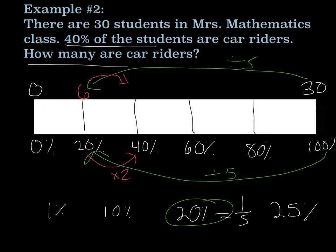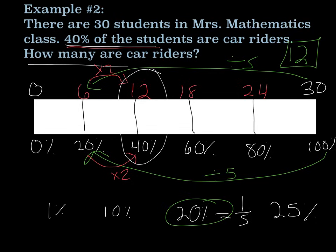But we're trying to get 40%. So to go from 20% to 40%, I would need to times it by 2. So I would have to do the same thing on top, times it by 2, which gives me 12. And if I needed to continue this, if I remember that every 20%, I'm adding 6, I could continue the number line. But the question in this problem says 40% of the students. So I go to 40% and I see that it is 12. So my answer would be that 12 students are car riders in this problem.